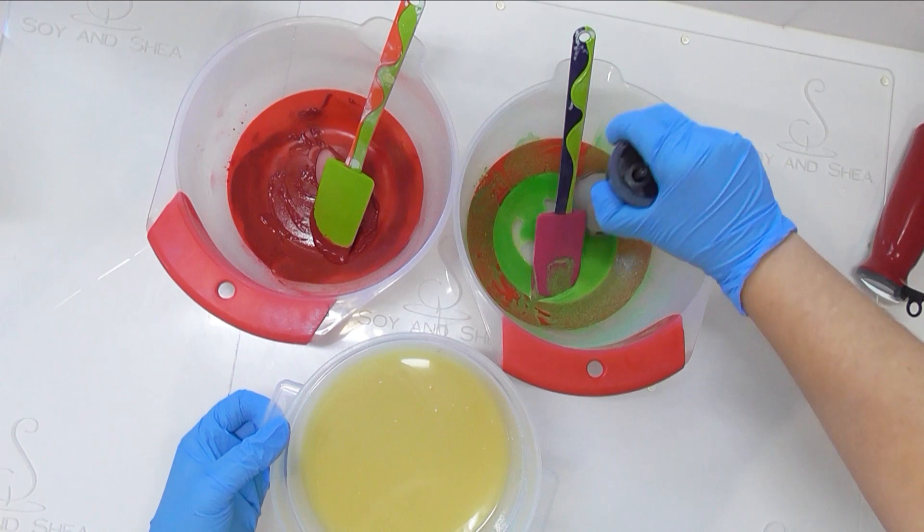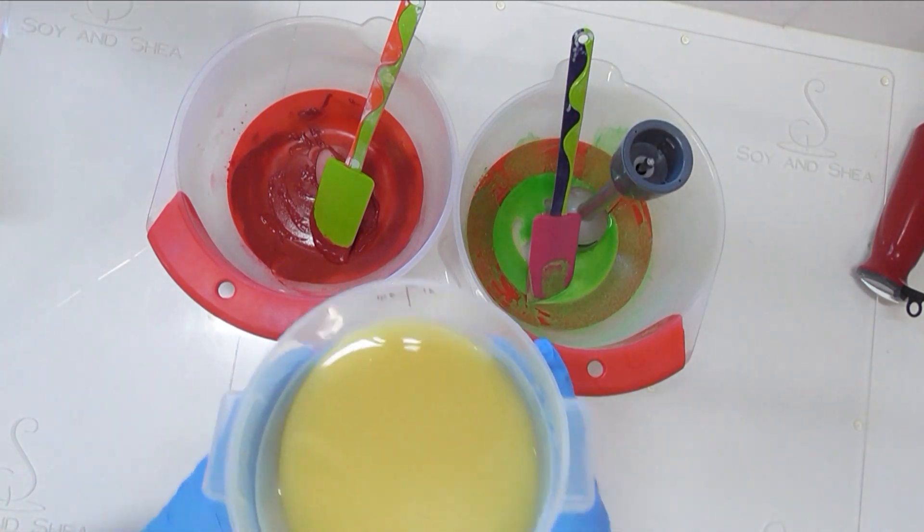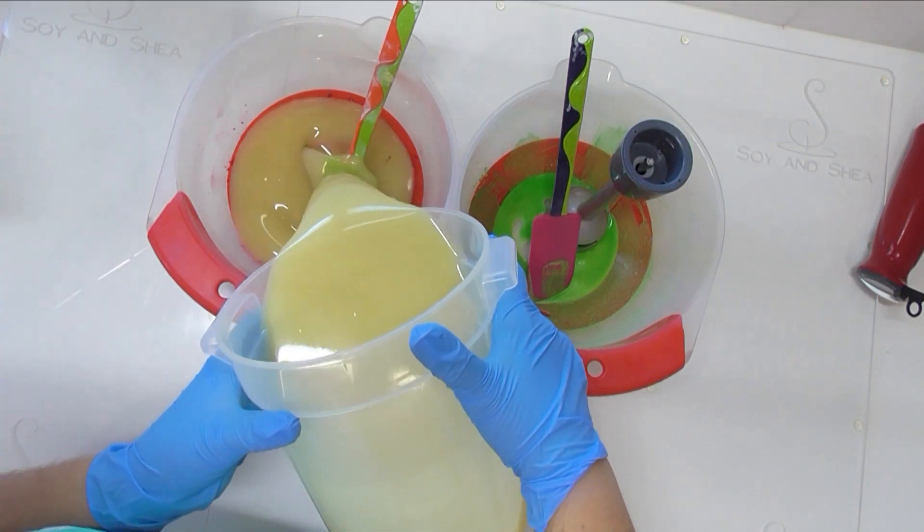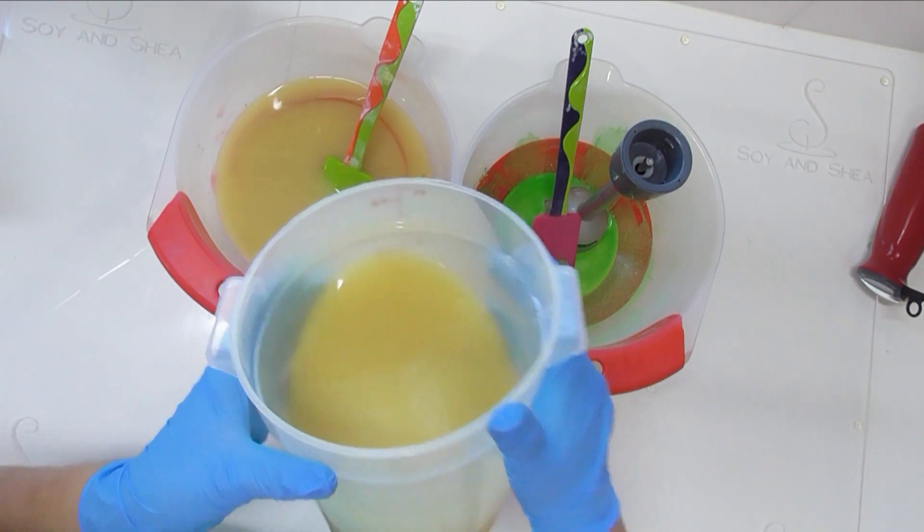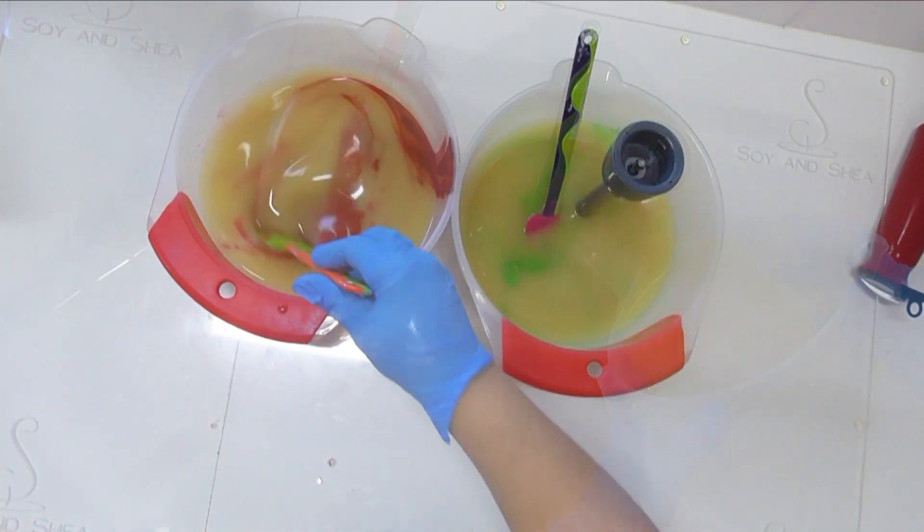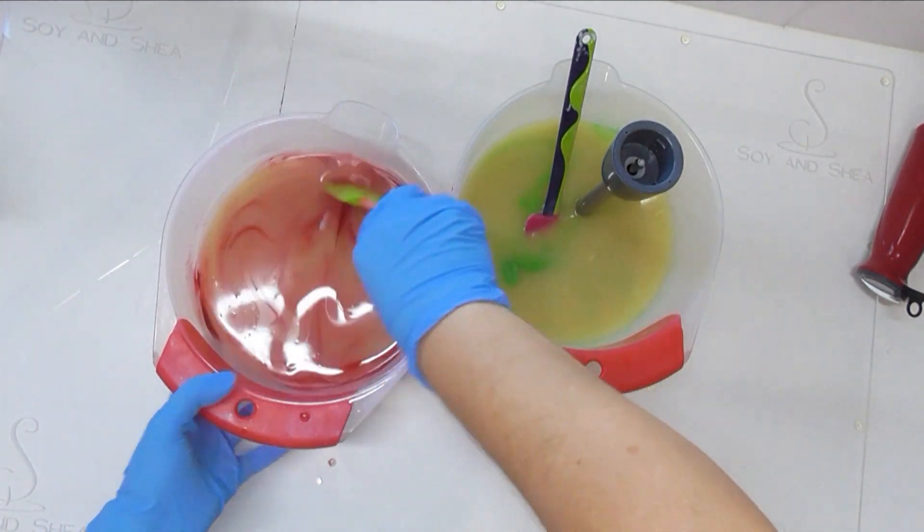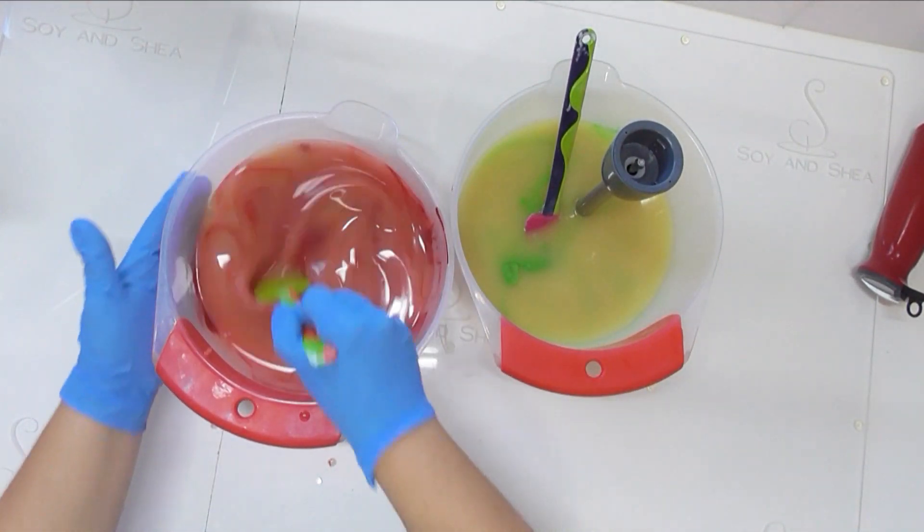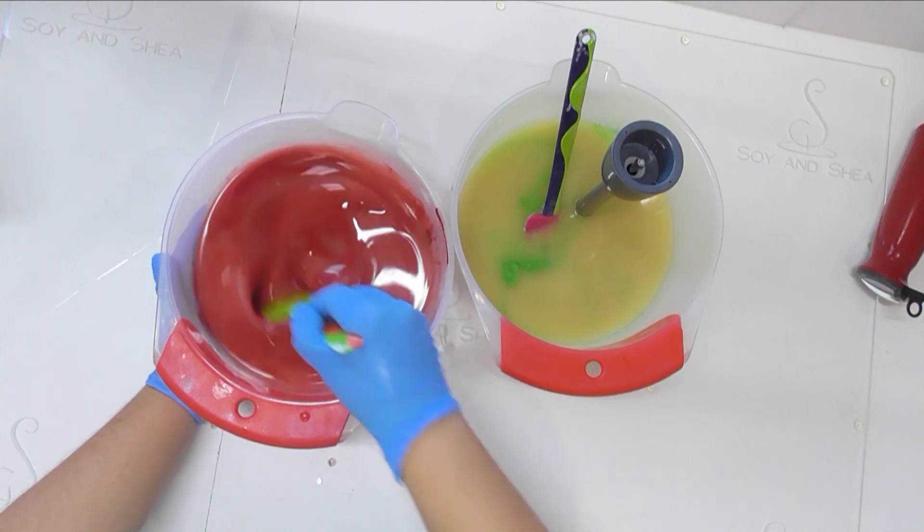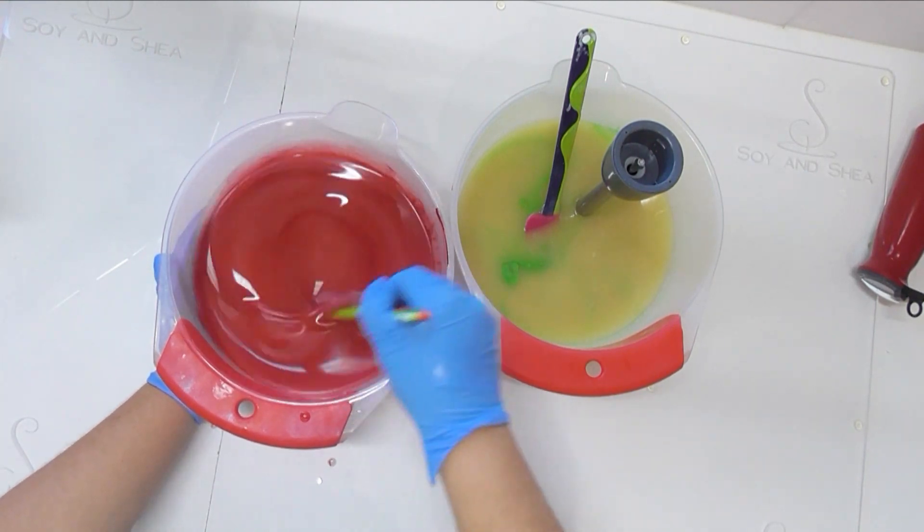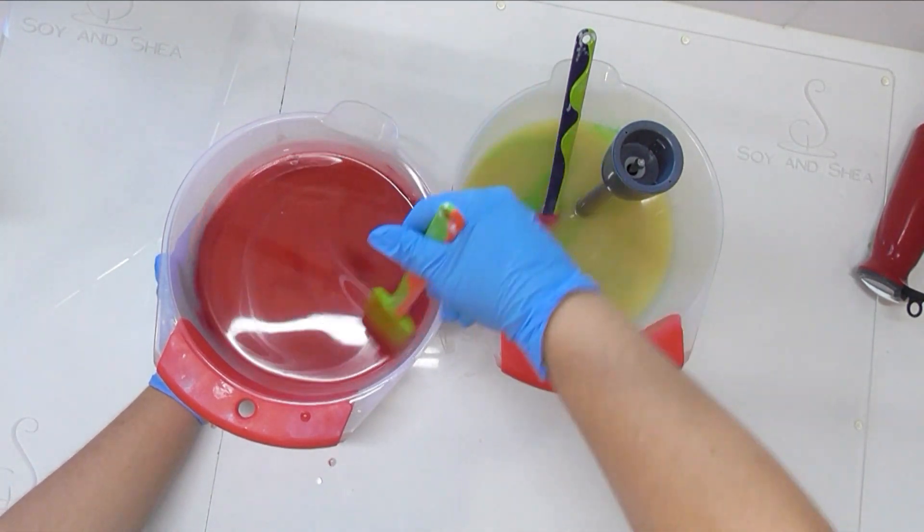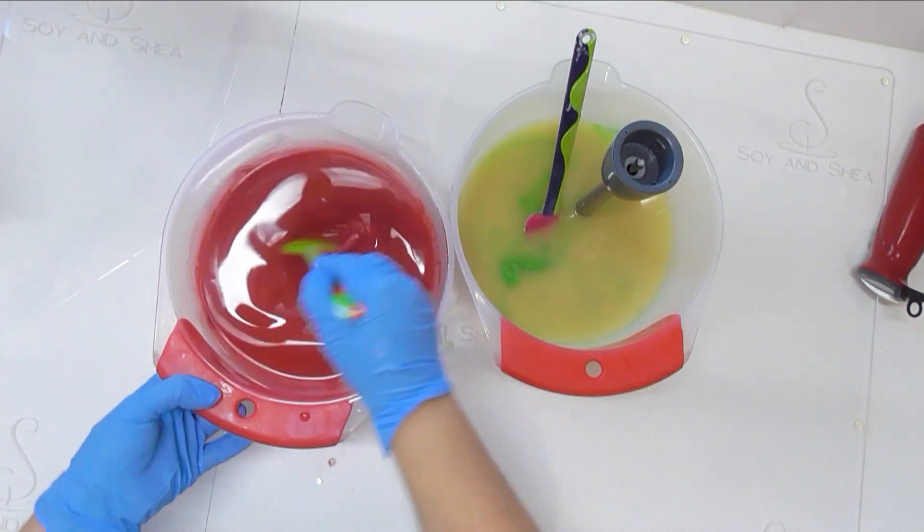I'm going to pop that in my green there and I'm going to split this evenly between these two jugs. Alright, I have scraped out that first bucket completely because we're not going to be using it anymore. What I am going to do is mix these colors in by hand before I add in the fragrance oil, and then I'm going to split it up for just a little bit more color.